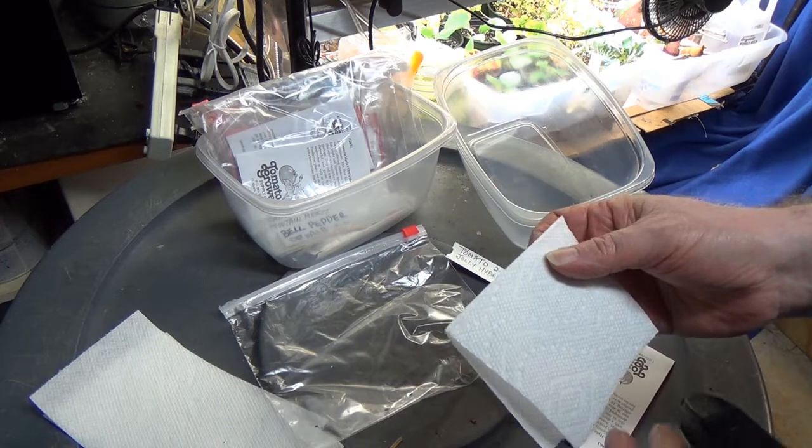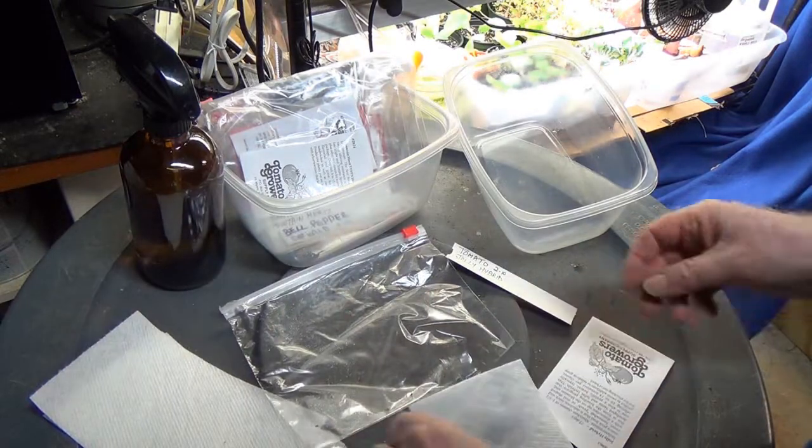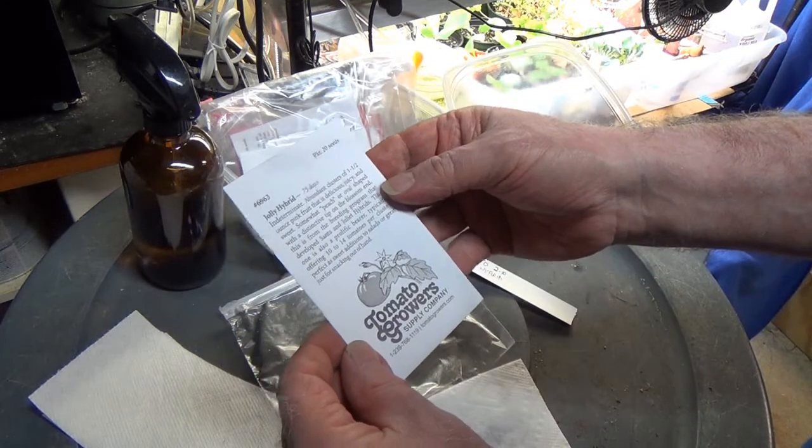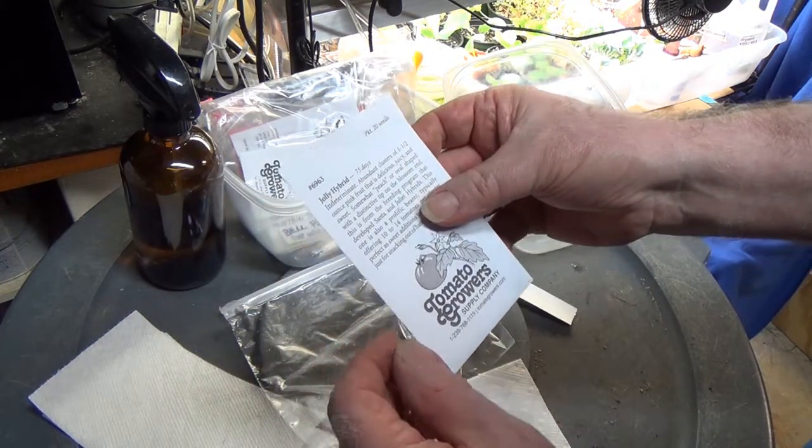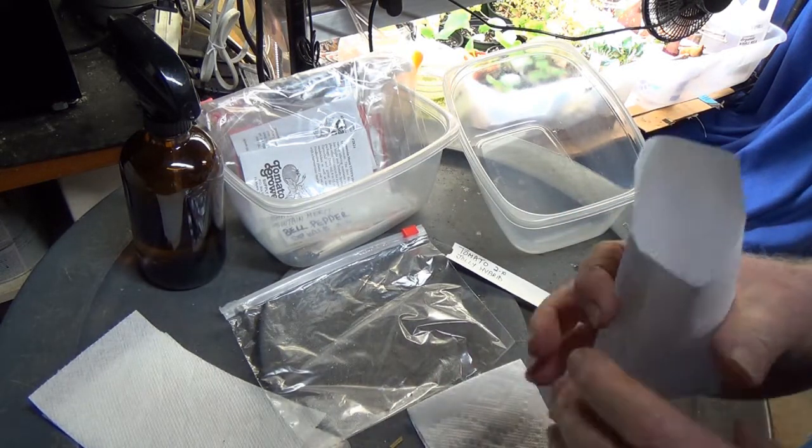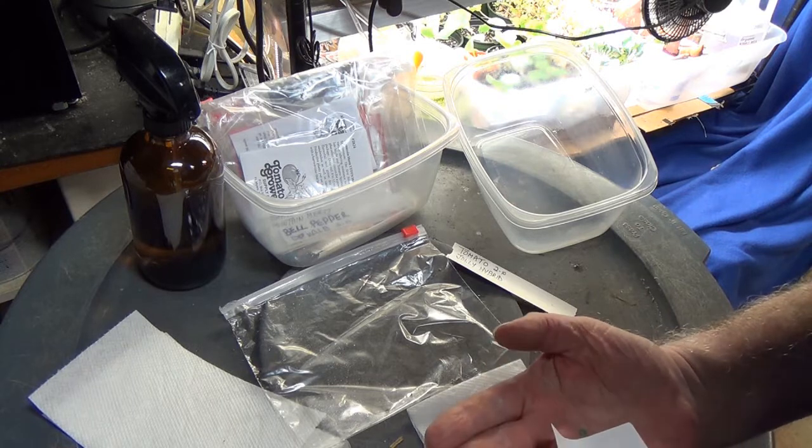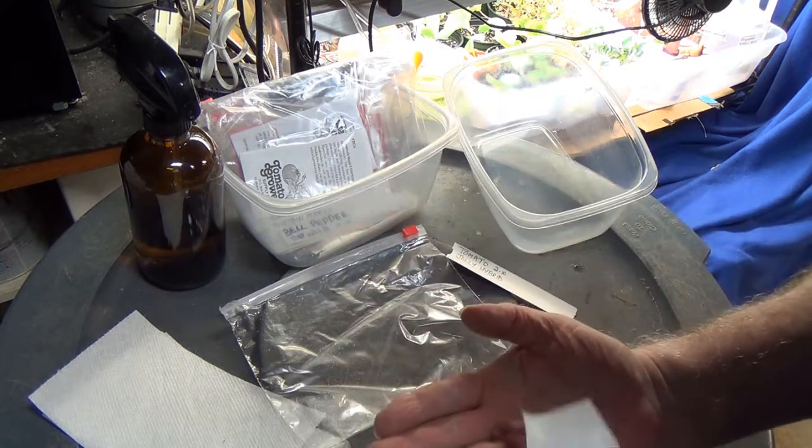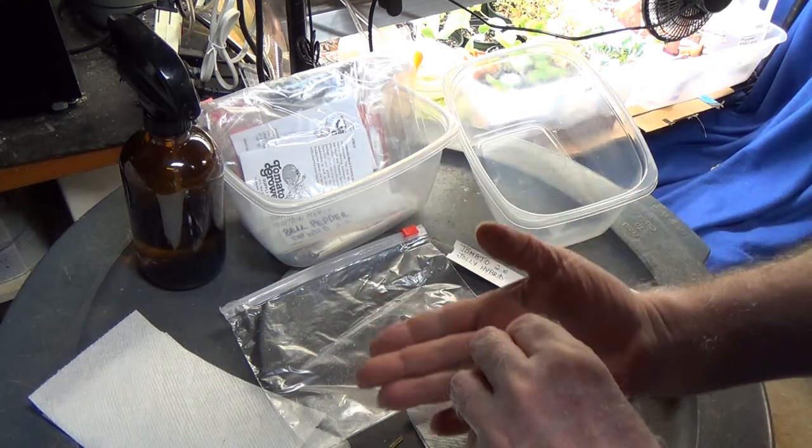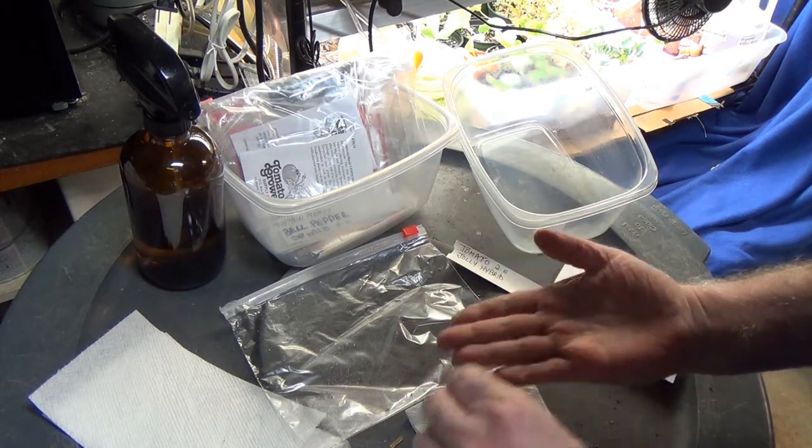I cut a half sheet paper towel into thirds, fold it in half, make it damp. These are a Jolly Hybrid, inch and a half ounce pink fruit, delicious, juicy, and sweet. Anything that says a tomato tastes good in February, you're sold. You are definitely a sucker for it. These are green seeds, so I'm guessing they're treated. I don't really know why they would be, but I'm going to put four seeds on this damp paper towel.